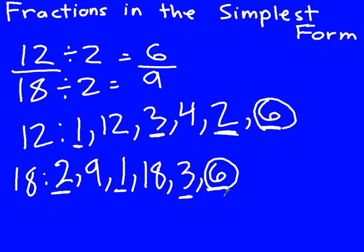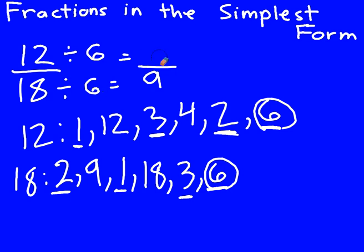So what do I need to divide my numerator and denominator by? I divide them both by 6. While 2 was a common factor, it wasn't the greatest common factor. So I'm going to divide 12 by 6 and divide 18 by 6. 12 divided by 6 equals 2, and 18 divided by 6 equals 3.